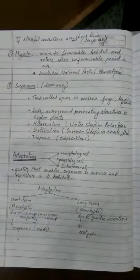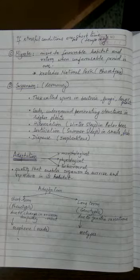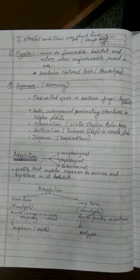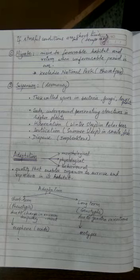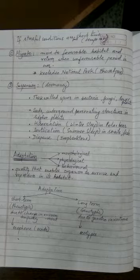The next thing is to understand is that there are some other options also with the organisms to perform, especially like take an example of birds or mammals. So if the stressful conditions are for short duration of time, now if the conditions, bad conditions, unfavorable conditions are only for maybe a month or so, two months or so, that means the temporary problems are there.